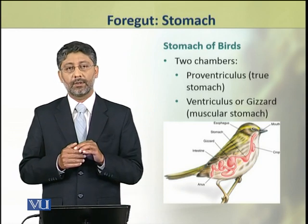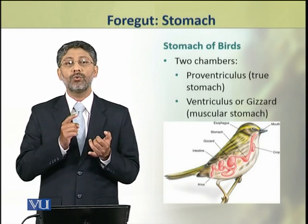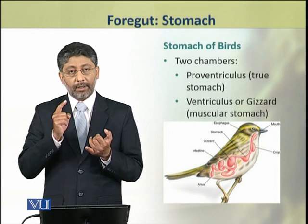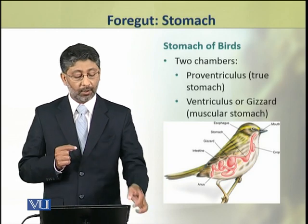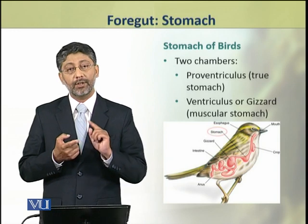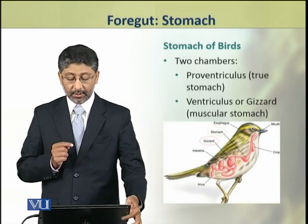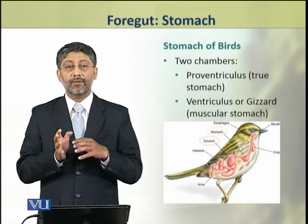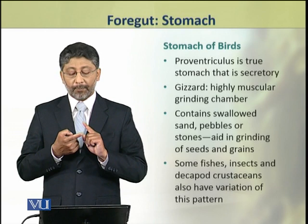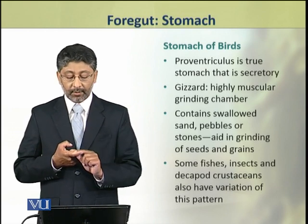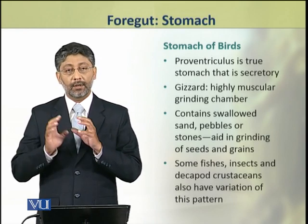Dear students, the bird's stomach is also multi-chambered — it has two chambers called proventriculus and gizzard (ventriculus). Proventriculus is the true stomach, which has a secretory function. The gizzard is the muscular stomach. Proventriculus is secretory, while the gizzard is a highly muscular grinding chamber.